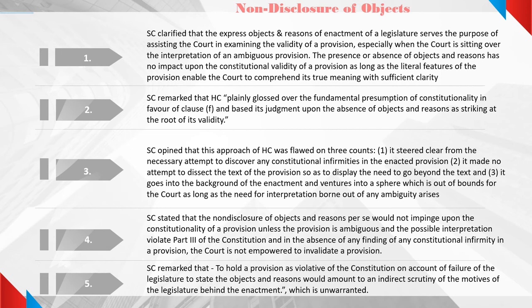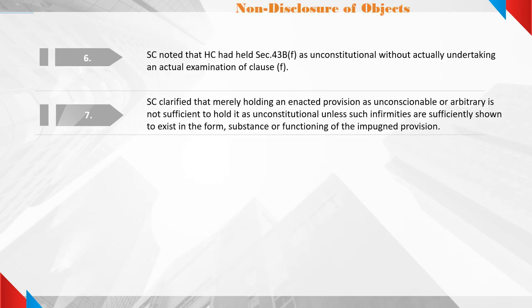The Supreme Court remarked that to hold a provision as violative of the Constitution on account of failure of the legislature to state the objects and reasons would amount to an indirect scrutiny of the motives of the legislature behind the enactment, which is unwarranted. The Supreme Court noted that the High Court had held Section 43B clause (f) as unconstitutional without actually undertaking an examination of clause (f). The Supreme Court clarified that merely holding an enacted provision as unconscionable or arbitrary is not sufficient to hold it as unconstitutional, unless such infirmities are sufficiently shown to exist in the form, substance, or functioning of the impugned provision.